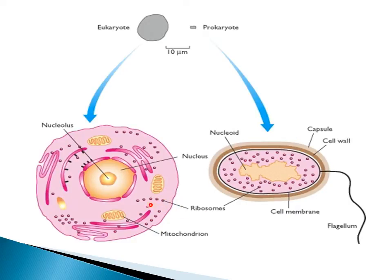The ribosomes here have an 80S subunit size compared to 70S ribosomes in the prokaryotic cell. As you can see, the eukaryotic cell is rich with organelles — you have the mitochondrion, the endoplasmic reticulum, Golgi bodies, lysosomes, and so on. However, there is a scarcity of cell organelles found in the prokaryotic cell.